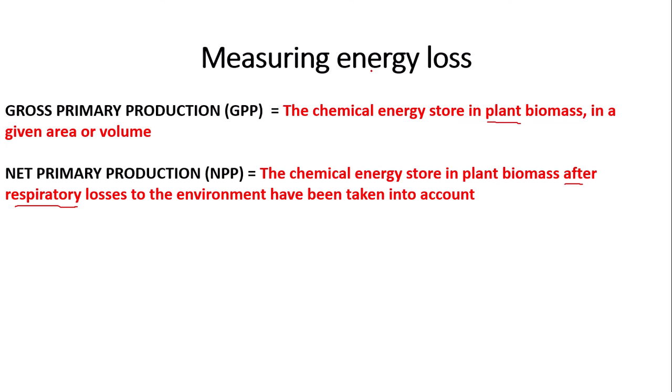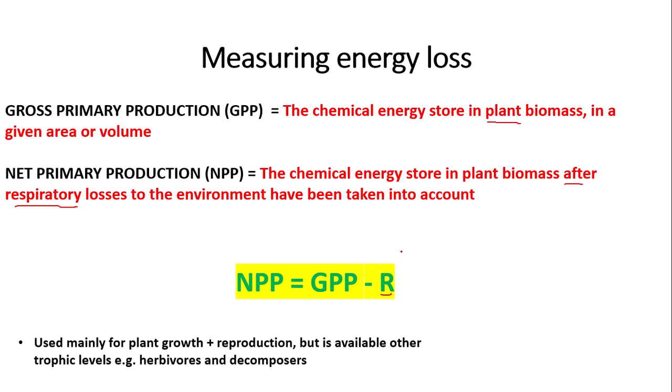We can calculate net primary production using this formula: net primary production equals gross primary production minus respiratory losses, denoted here by the letter R. Net primary production calculations are mainly used for plant growth and reproduction, as it doesn't take into account energy losses through excretion of faeces and urine.